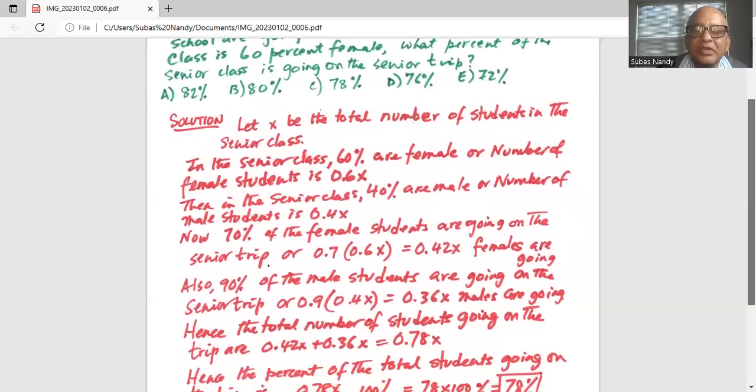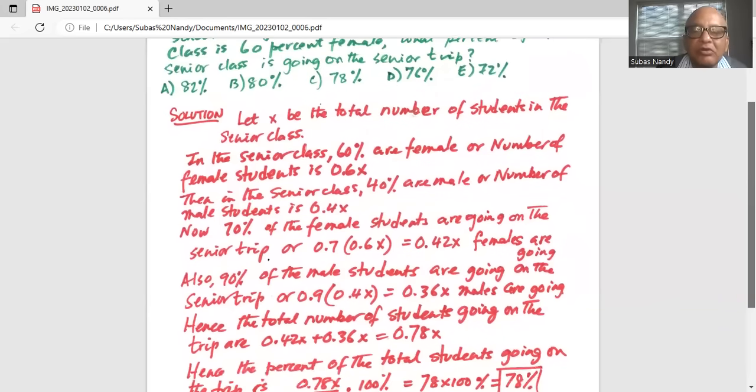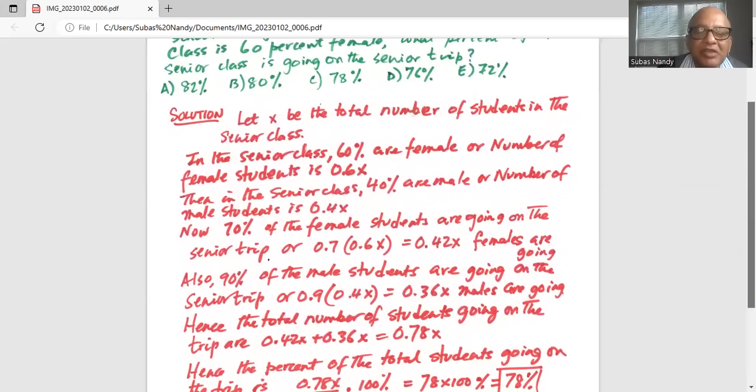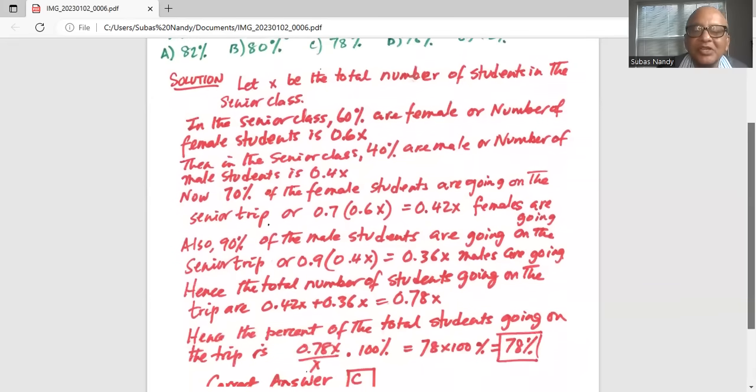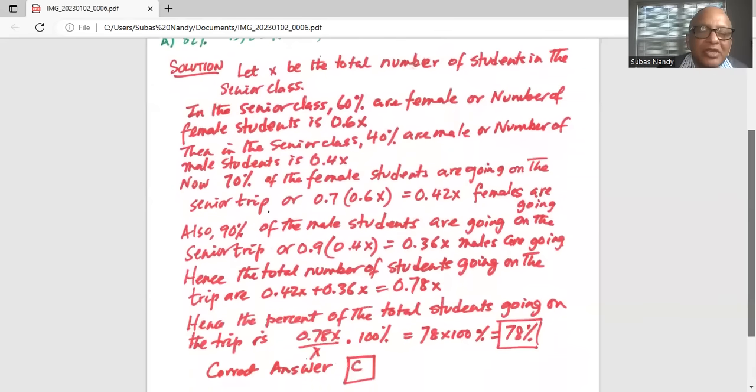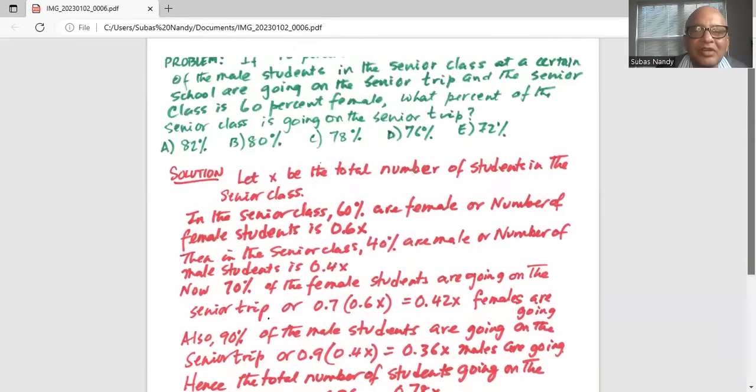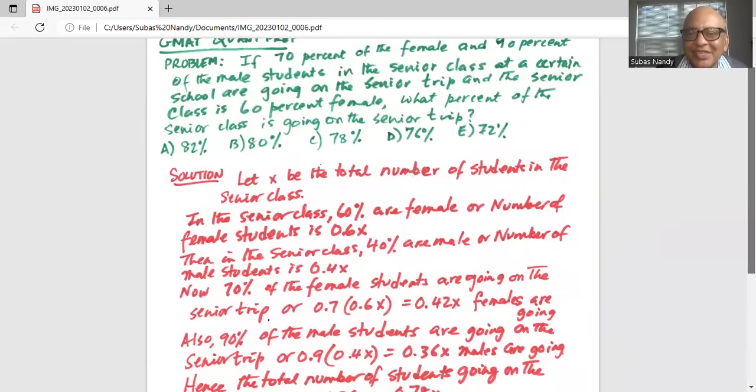Hence, the total number of students going on the trip or 0.42X plus 0.36X is equal to 0.78X. Hence, the percent of the total students going on the trip is 0.78X divided by the total X times 100%, or 0.78 times 100 is 78%. Hence, the correct answer is option C, 78%.